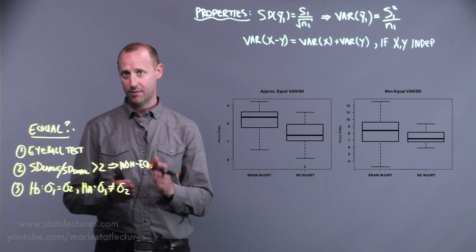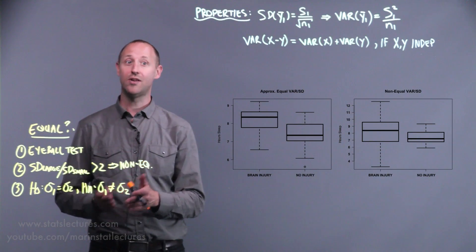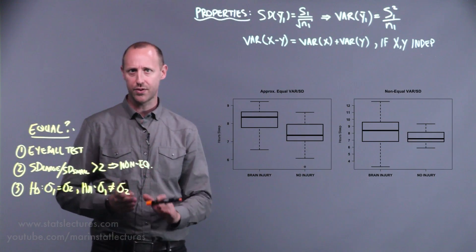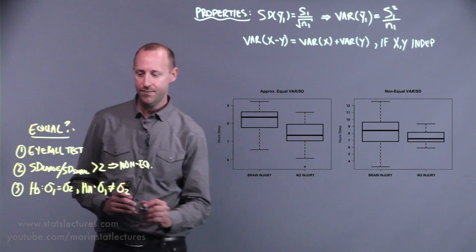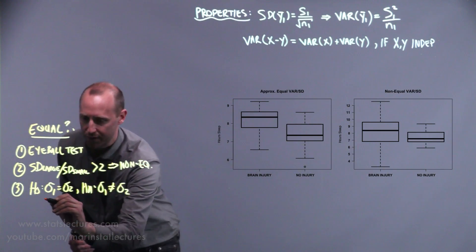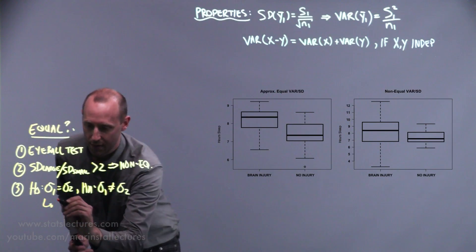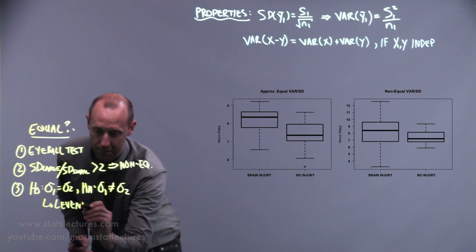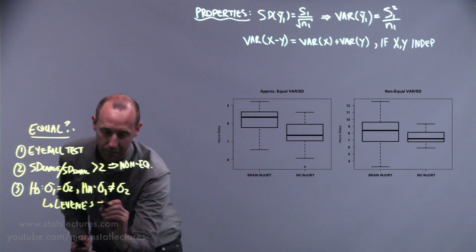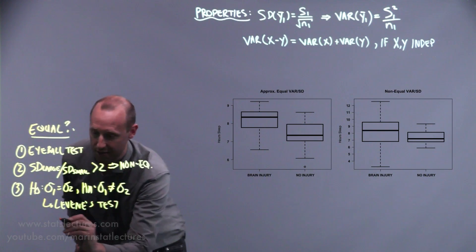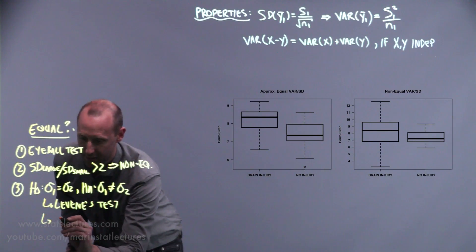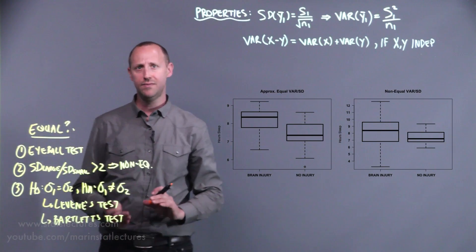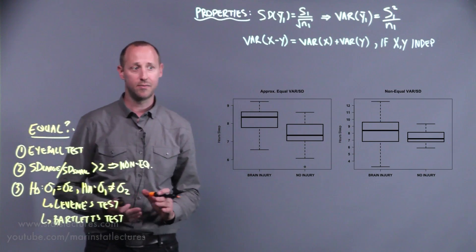The variance is the standard deviation squared, so you can express it either way. Formal tests for doing this include Levene's test and Bartlett's test, along with a few other tests that take slightly different approaches.